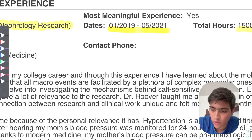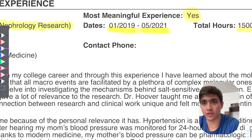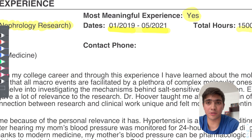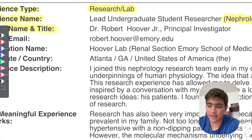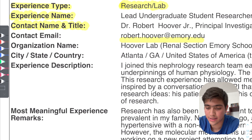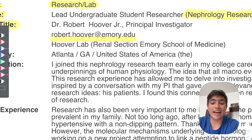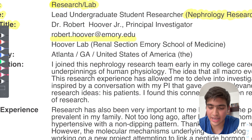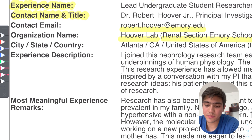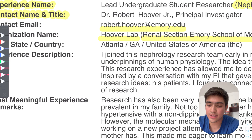I also chose this as a most meaningful experience. Out of the 15 descriptions, you can choose three as your most meaningful, and you get an extra space to write about why that experience was one of your most meaningful. I put my PI for contact name, title, and email. For organization name, since the lab was associated with the Emory School of Medicine, I called it the Hoover Lab and added in parentheses the division and university it belongs to. The location was Atlanta, Georgia, United States.